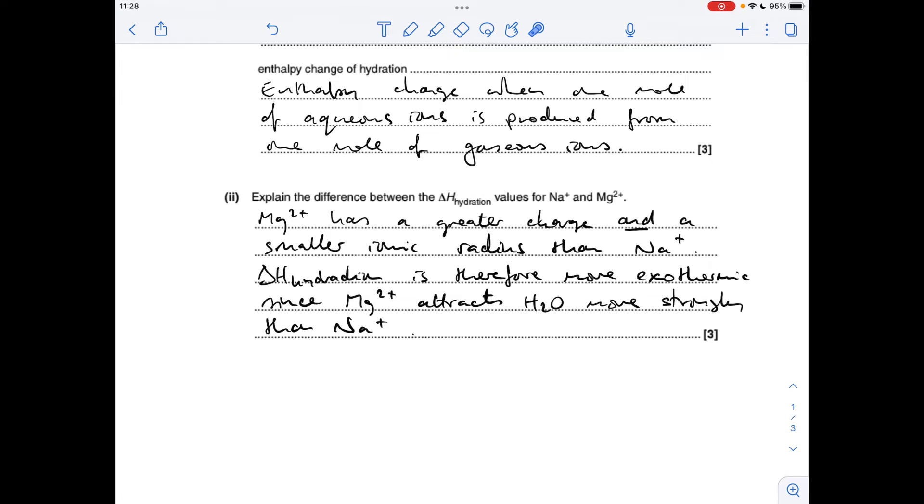Part two now, the difference between the enthalpy change of hydration of the sodium ion and the magnesium 2+ ion. It's all down to the different charge and the different ionic radius of the two ions. So Mg²⁺ has got a greater charge and a smaller ionic radius than Na⁺, and so therefore its enthalpy change of hydration is going to be more exothermic because it attracts water more strongly.